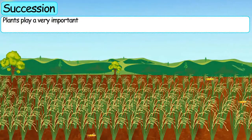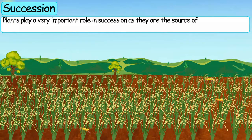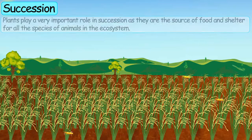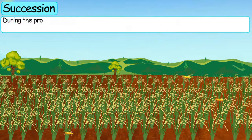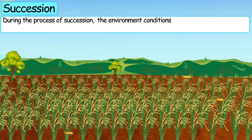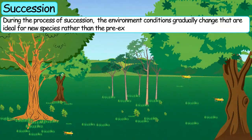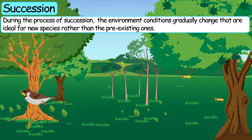Plants play a very important role in succession as they are the sources of food and shelter for every species of animal in the ecosystem. During the process of succession, environmental conditions gradually change that are ideal for new species rather than pre-existing ones.